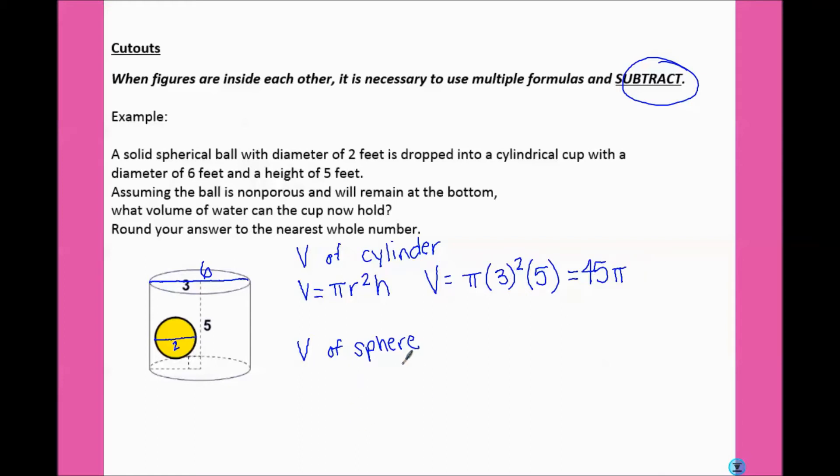For the volume of the sphere, volume equals 4 thirds pi r cubed. It told us the diameter is 2, so the radius would be 1. So that would give us just 4 thirds pi as our volume.